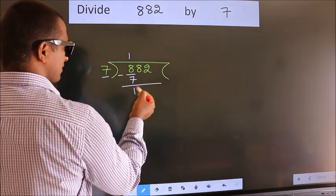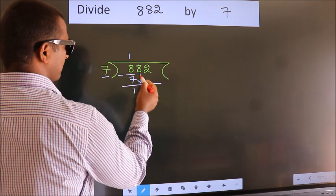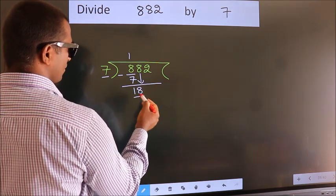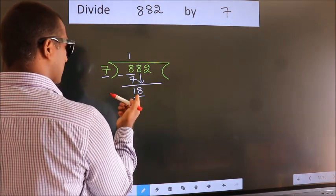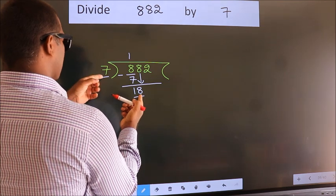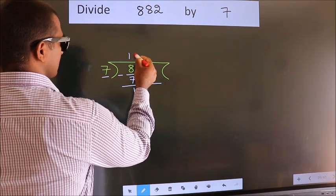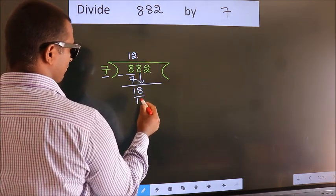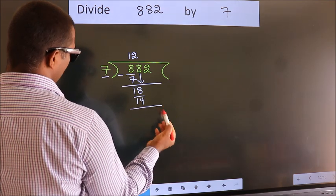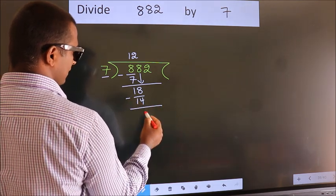After this, bring down the beside number. So, 8 down. So, 18. A number close to 18 in 7 table is 7 2s 14. Now, we subtract. We get 4.